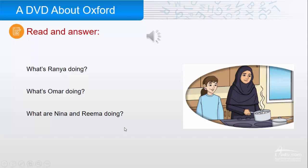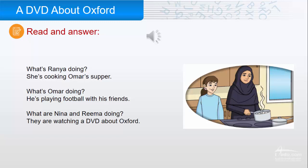What are you doing Rania? I'm cooking Omar's supper. He's playing football with his friends. He's always hungry when he comes in. Can I help you? No, thank you Nina. It's very nice of you, but I'm nearly finished. What are you and Reema doing? We're watching my DVD. It's about Oxford. Oxford? Yes. It's the city I come from in England. There. Finished. Can I come and watch your DVD? Of course.